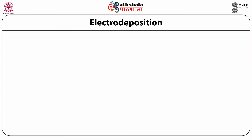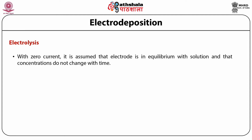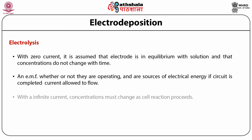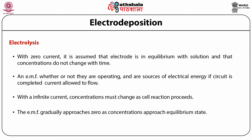For potentiometry, the cell is not allowed to operate — with zero current it is assumed that the electrode is in equilibrium with the solution and that concentrations do not change with time. Such cells possess an EMF whether or not they are operating, and are sources of electrical energy if the circuit is completed and current is allowed to flow.